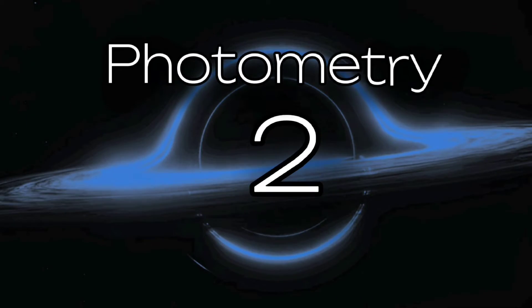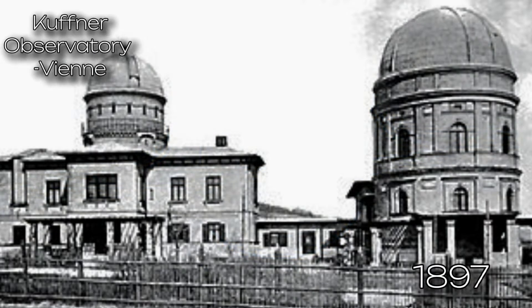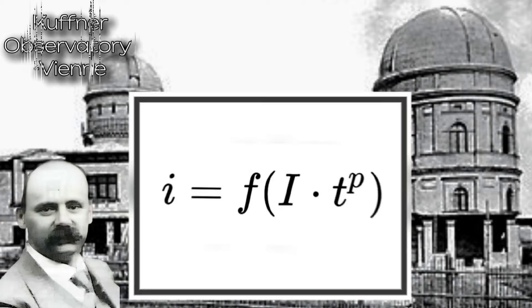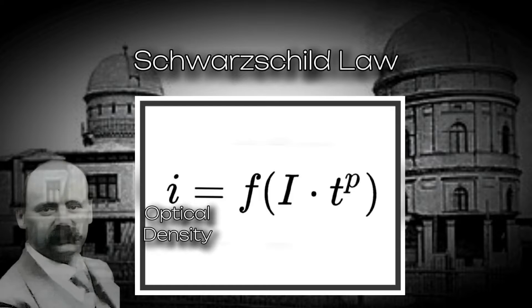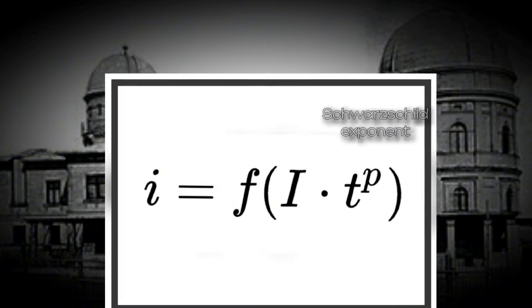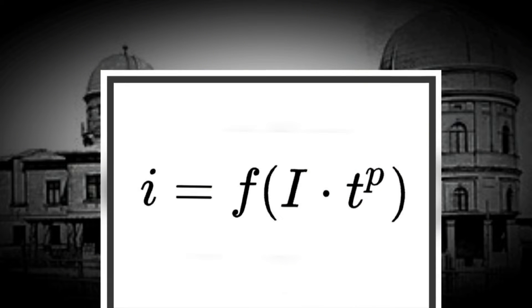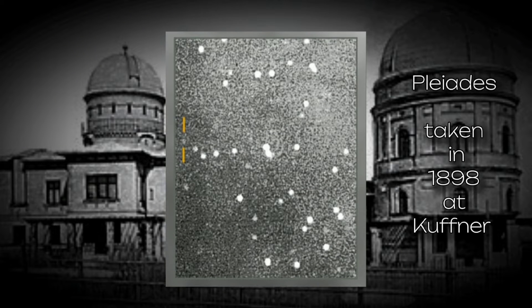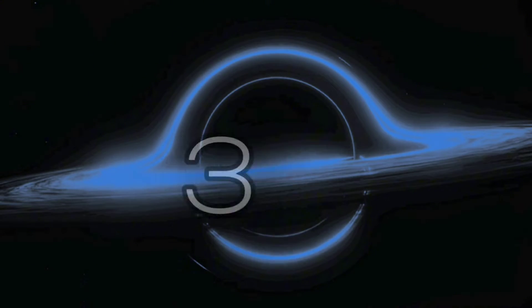2. Photometry. In 1897, while working at the Kufner Observatory in Vienna, Schwarzschild devised a formula to calculate the optical density of photographic material. This formula included an exponent, now known as the Schwarzschild exponent. The formula is crucial to achieving more precise photographic measurements of the intensities of dim astronomical bodies.